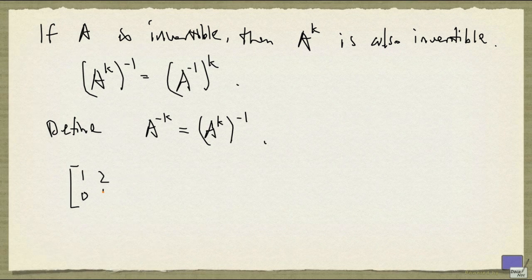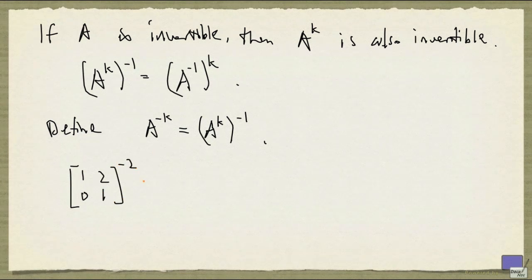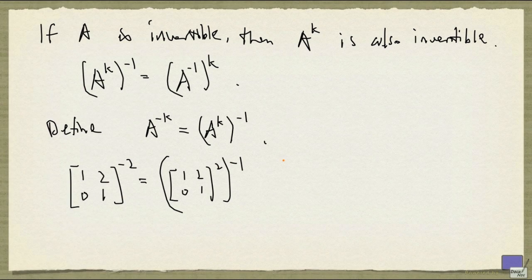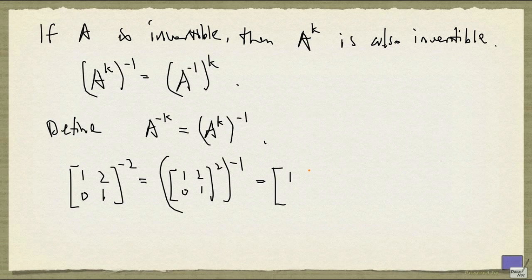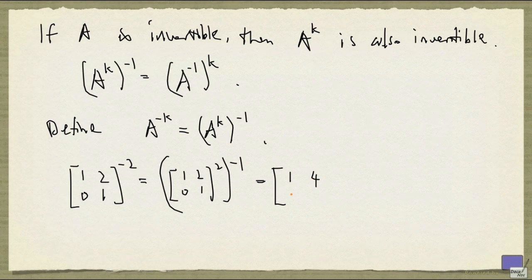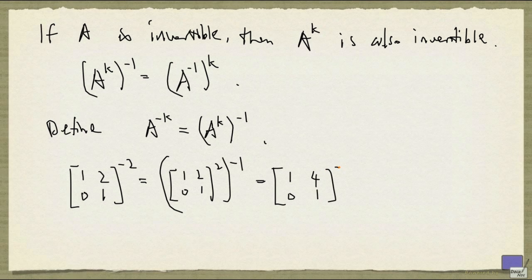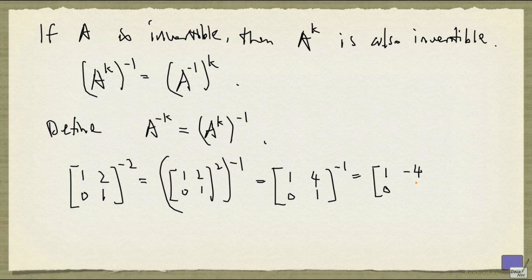So if I look at, say something like this, to the power minus 2, it's the same as taking this matrix to the power 2 and then taking the inverse. So the matrix taken to the power 2 is 1, 4, 0, 1. And then take the inverse, and then you'll get 1, negative 4, 0, 1.